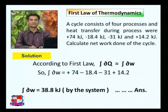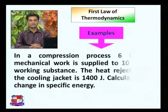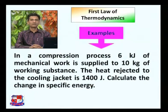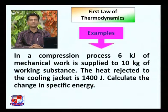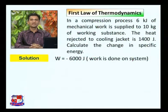Now the second example: in a compression process, 6 kJ of mechanical work is supplied to 10 kg of working substance. The heat rejected to the cooling jacket is 1400 J. We need to calculate the change in specific internal energy. Since work is done on the system, W is negative, so W equals -6000 J.